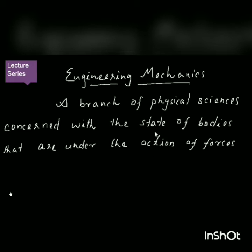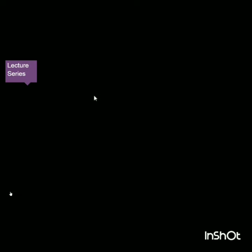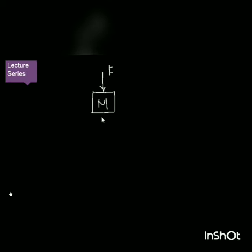Engineering Mechanics is a branch of physical science that concerns with the state of bodies that are under the action of forces. Let us consider a body of mass M and the action of forces acting on the body — there are four forces acting on the body.